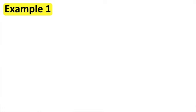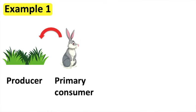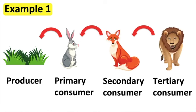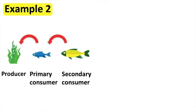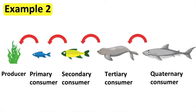Here is a food chain example: the rabbit eats the plants, the fox eats the rabbits, and the lion eats the fox. The plants are the producers. The rabbit is the primary consumer. The fox is the secondary consumer. The lion is the tertiary consumer. Another example: algae, small fish, bigger fish, sea lion, sharks. The small fish eat the algae, the bigger fish eat the small fish, the sea lion eats the bigger fish, and the sharks eat the sea lions.